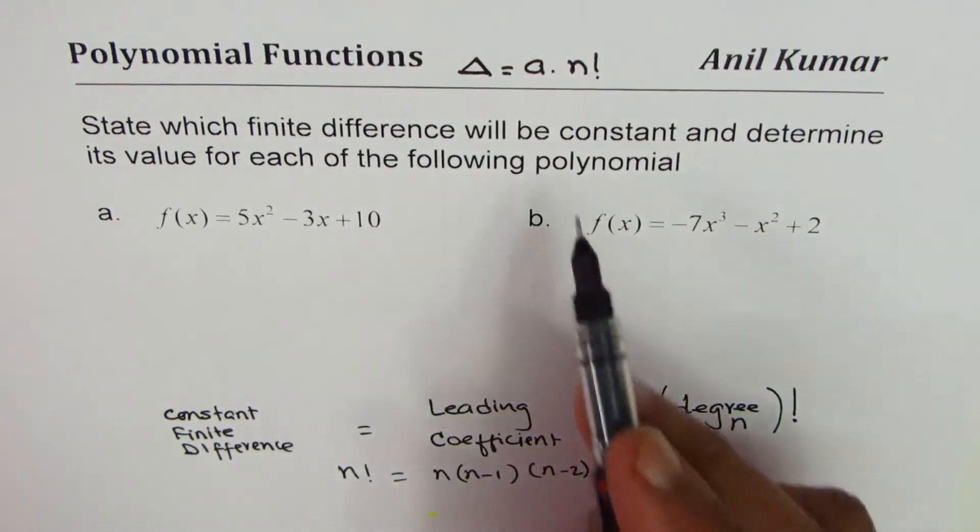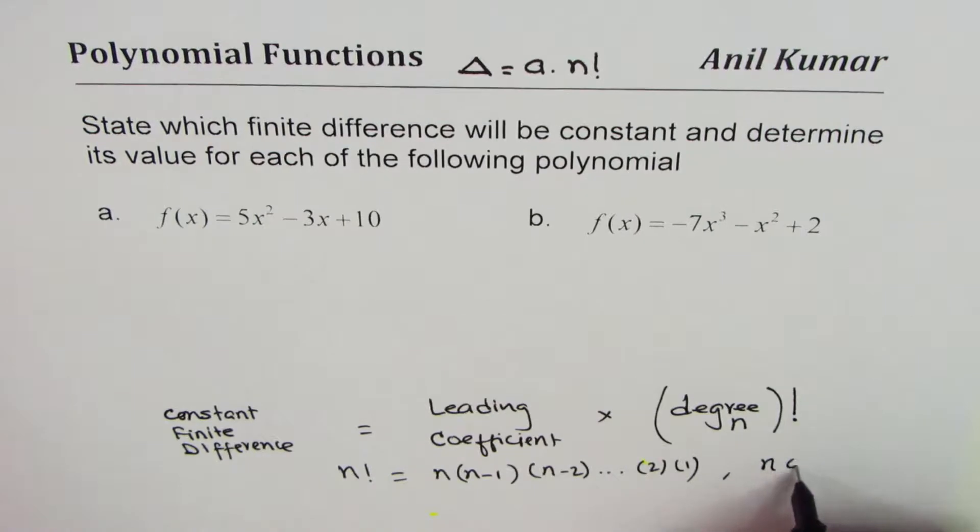As you know, in polynomials, n belongs to a set of whole numbers. It has to be a positive integer. So that is the relation. Now you know the relation, I'd like you to find the answer for this particular equation. So you need to state which finite difference will be constant and determine its value. Let's begin.